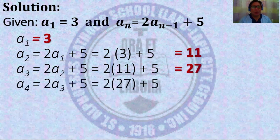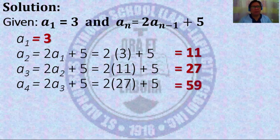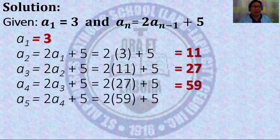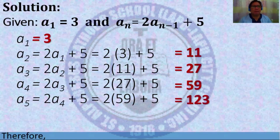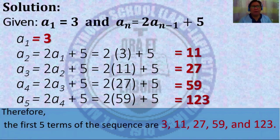For a_4, that is equal to 2 * a_3 + 5. For a_5, that is equal to 2 * a_4 + 5 = 2 * 59 + 5, which equals one hundred twenty-three. Therefore, the first five terms of the sequence are three, eleven, twenty-seven, fifty-nine, and one hundred twenty-three.